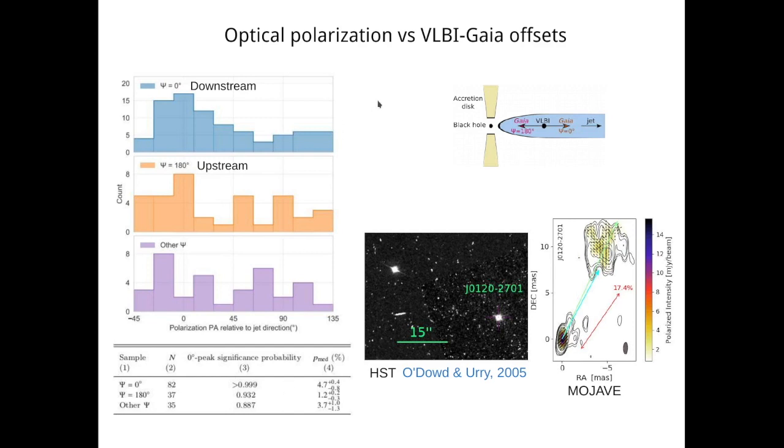So this orientation of a polarization plane with respect to the jet direction is consistent with the toroidal magnetic field in the jet. And here on the bottom right I show just an example source, one of the sources from this downstream sample.